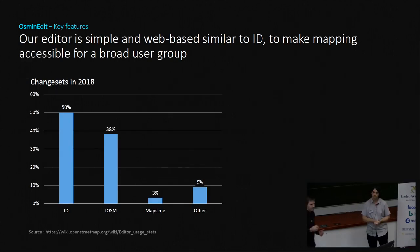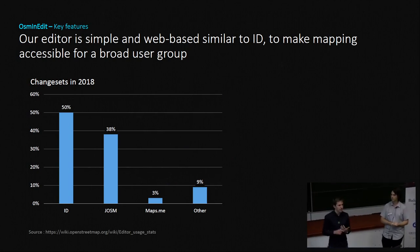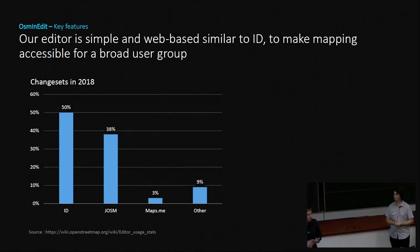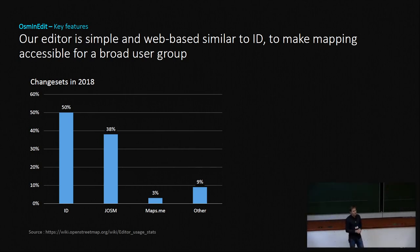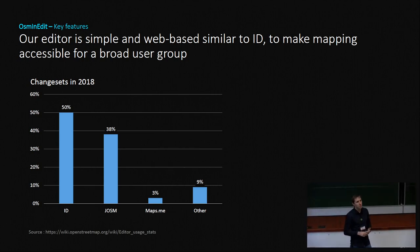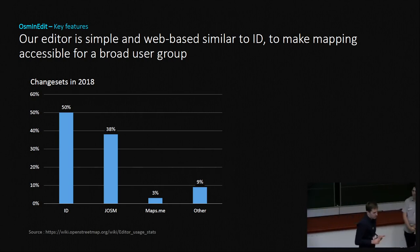We made it web-based. What you see here is a chart of changesets done mostly by the iD editor, followed by JOSM — not surprising. But we think web-based is the better way to go. Our hypothesis is that it's easier, because JOSM requires installation and more expertise. So we said it has to be web-based and similar in usage to iD. That was our takeaway from these statistics.